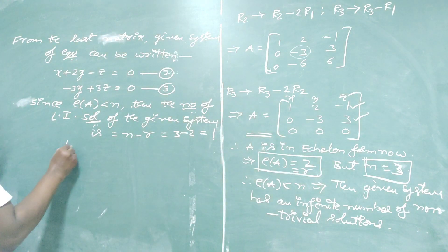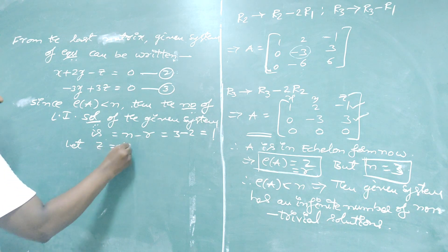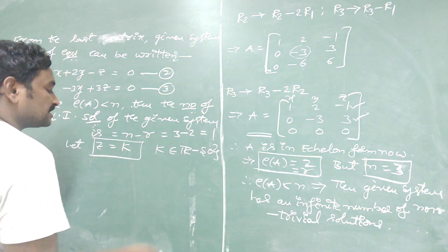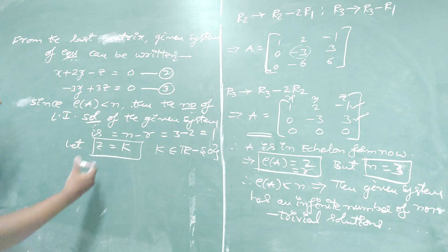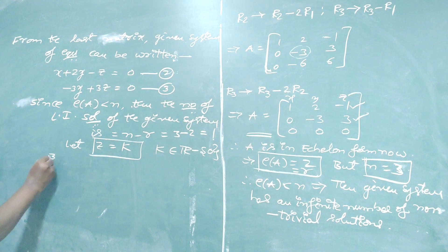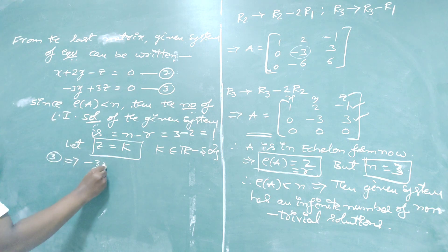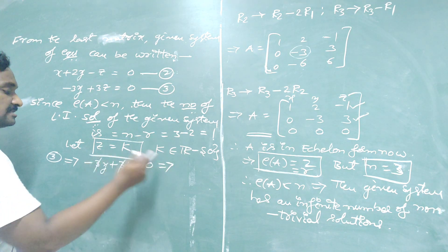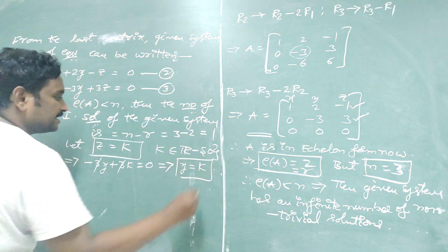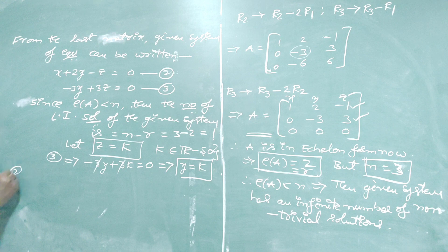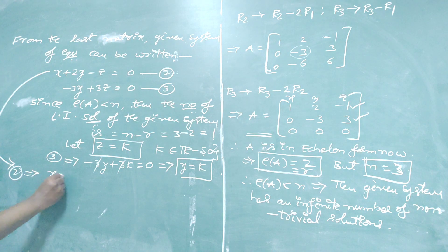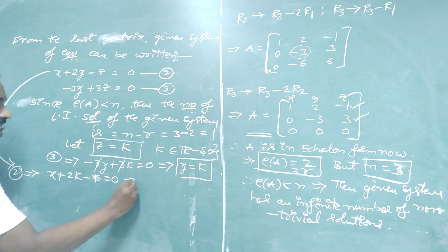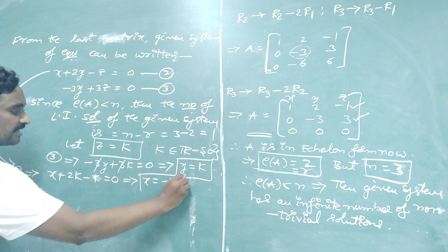Taking z = k (non-zero constant), from the second equation: minus 3y + 3k = 0, so 3 cancels and minus y = minus k, giving y = k. From the first equation: x + 2y − z = 0, so x + 2k − k = 0, meaning x + k = 0, therefore x = minus k.